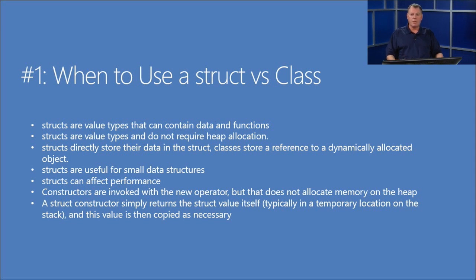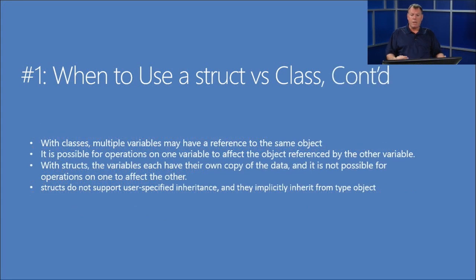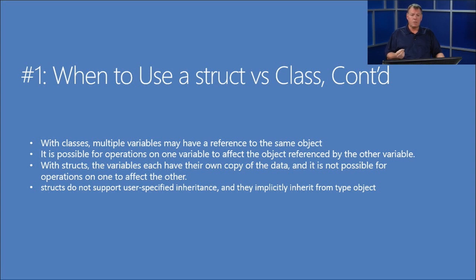If we pass a class, we actually pass a reference to the object — only the memory address — so it's a much smaller piece of information passed back and forth. If we make a change in a struct, we make a change to a copy of the struct; that's how a value type works. With a class, we're passing a reference to the class itself, which means any change to the value in the class changes the original object, because we're passed a reference to it in memory. Let's step out to a demo in Visual Studio and see what that looks like.